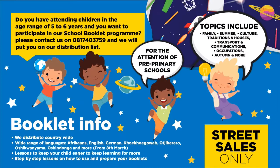Do you have children in the age range of 5 to 6 years and want to participate in our school booklet program? Please contact us on 08174 3759 and we will put you on our distribution list. For the attention of pre-primary schools. Topics include family, summer, culture, traditions and houses, transport and communications, occupations, autumn and more. We distribute countrywide in over 7 different languages.